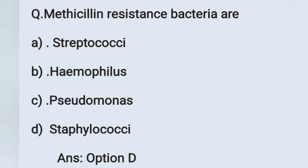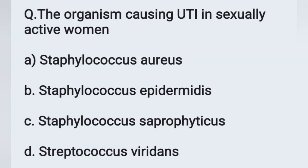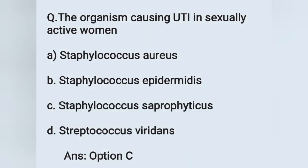The next question: The organism causing urinary tract infection (UTI) in sexually active women is — option A: Staphylococcus aureus, option B: Staphylococcus epidermidis, option C: Staphylococcus saprophyticus, option D: Streptococcus viridans. The correct answer is Staphylococcus saprophyticus. Option C is the correct answer.